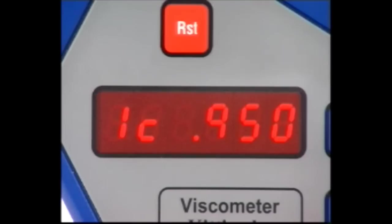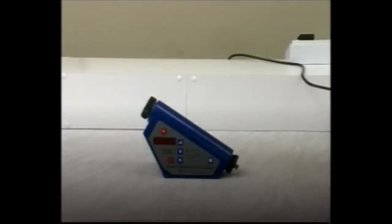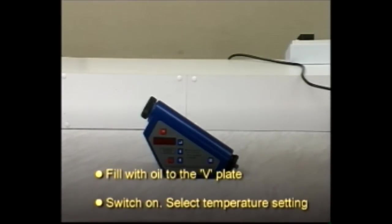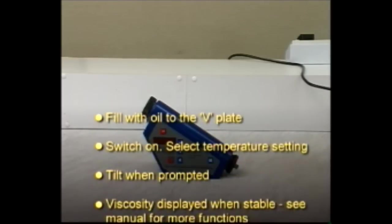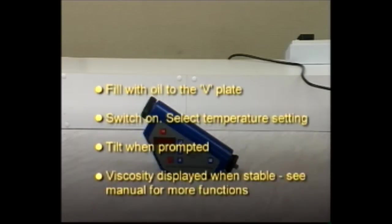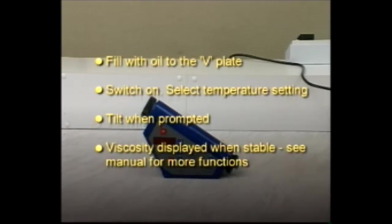This value will then be used by the viscometer for all the other calculations. To summarize, fill with oil to the V-plate, switch on, select temperature setting, tilt when prompted, viscosity displayed when stable. See your manual for more functions.